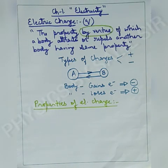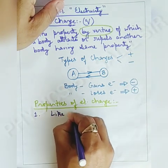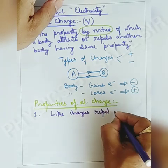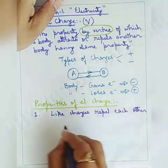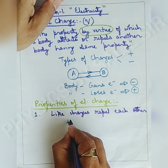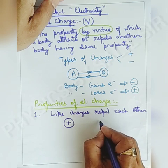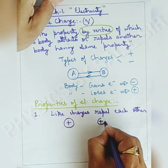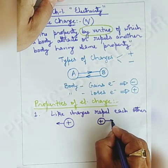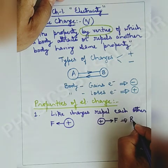First property: like charges repel each other. If there is a body having positive charge and another body with a similar positive charge is brought near to it, they both will repel each other. Capital F denotes the repulsive force.